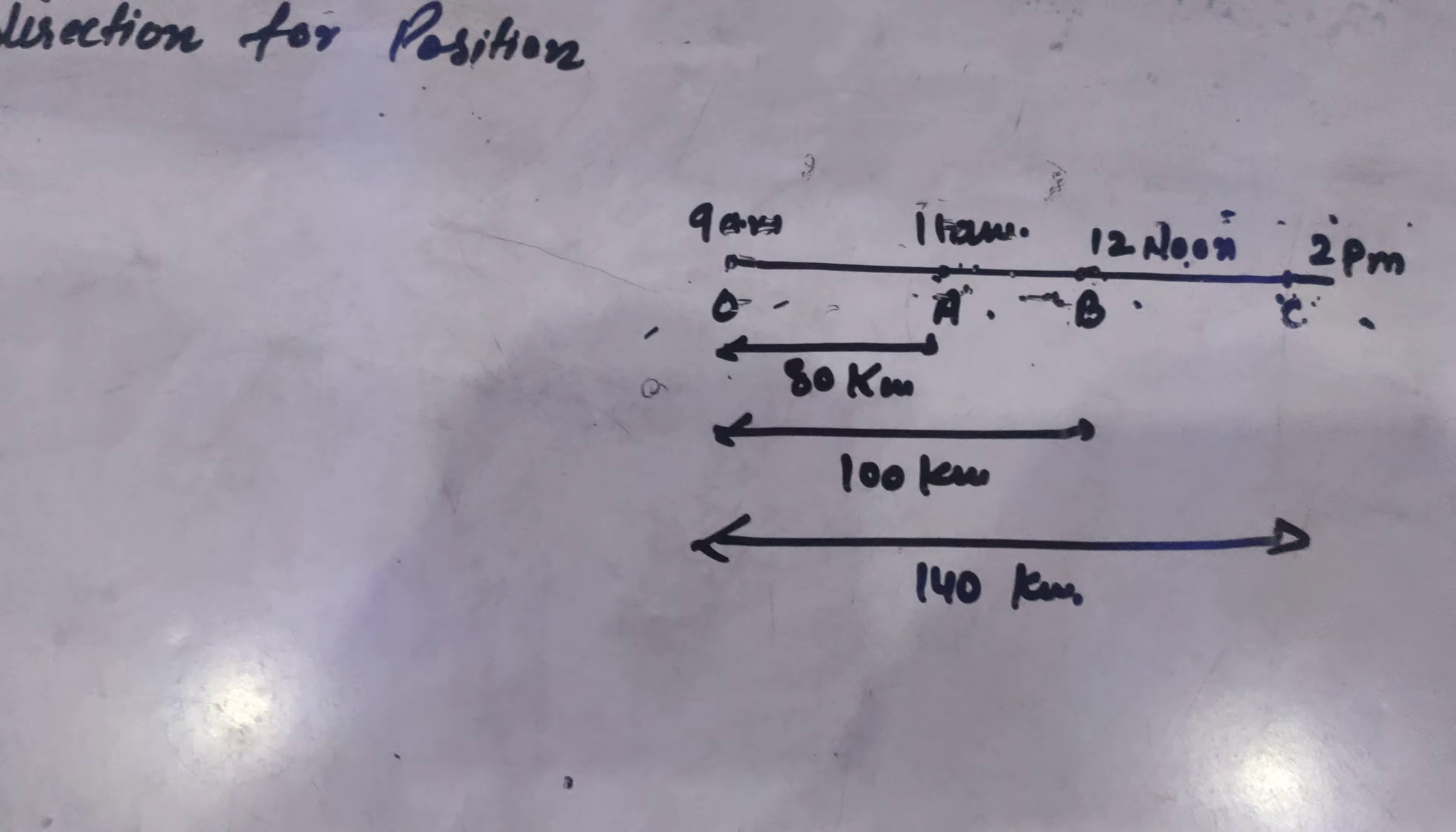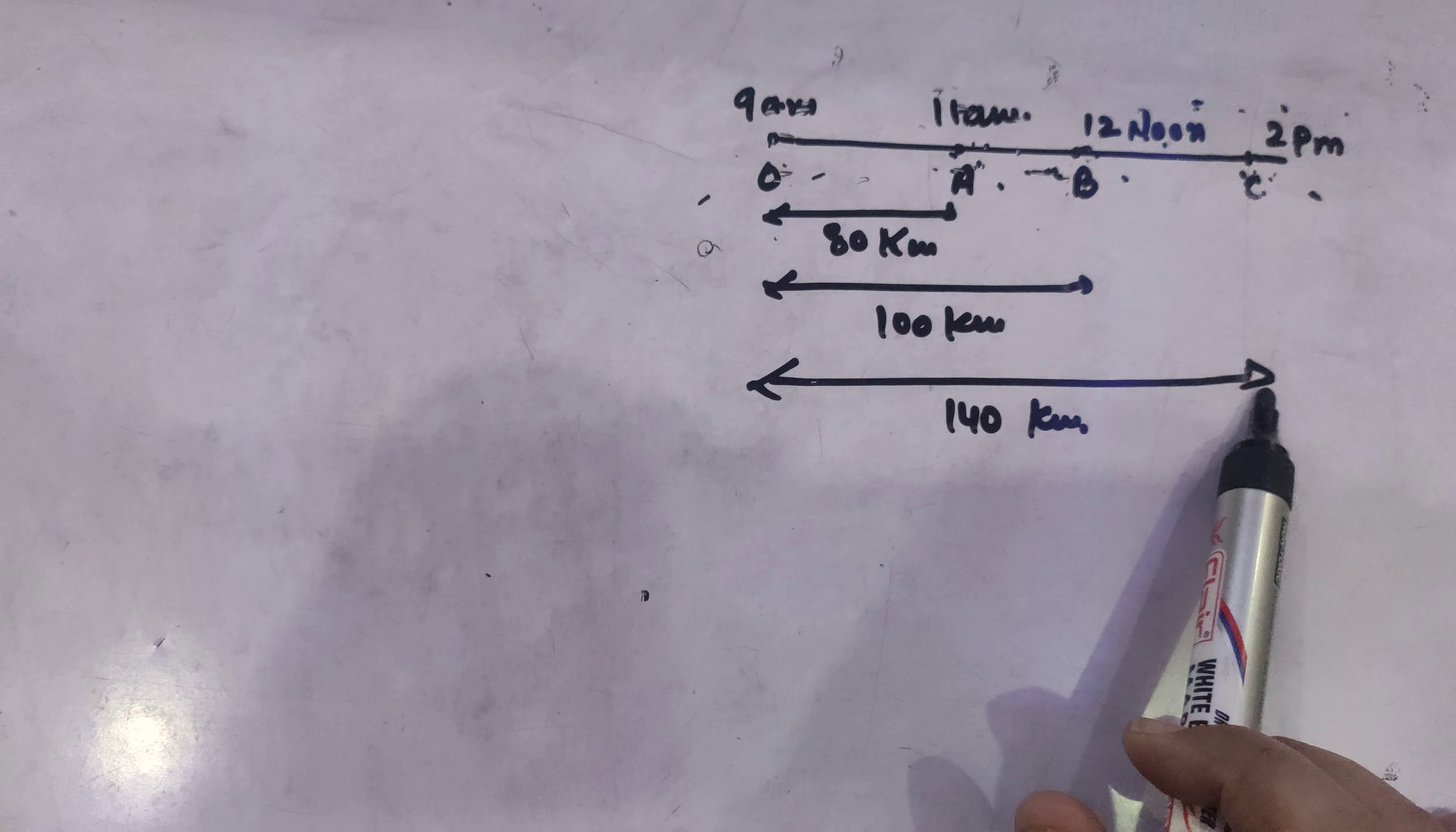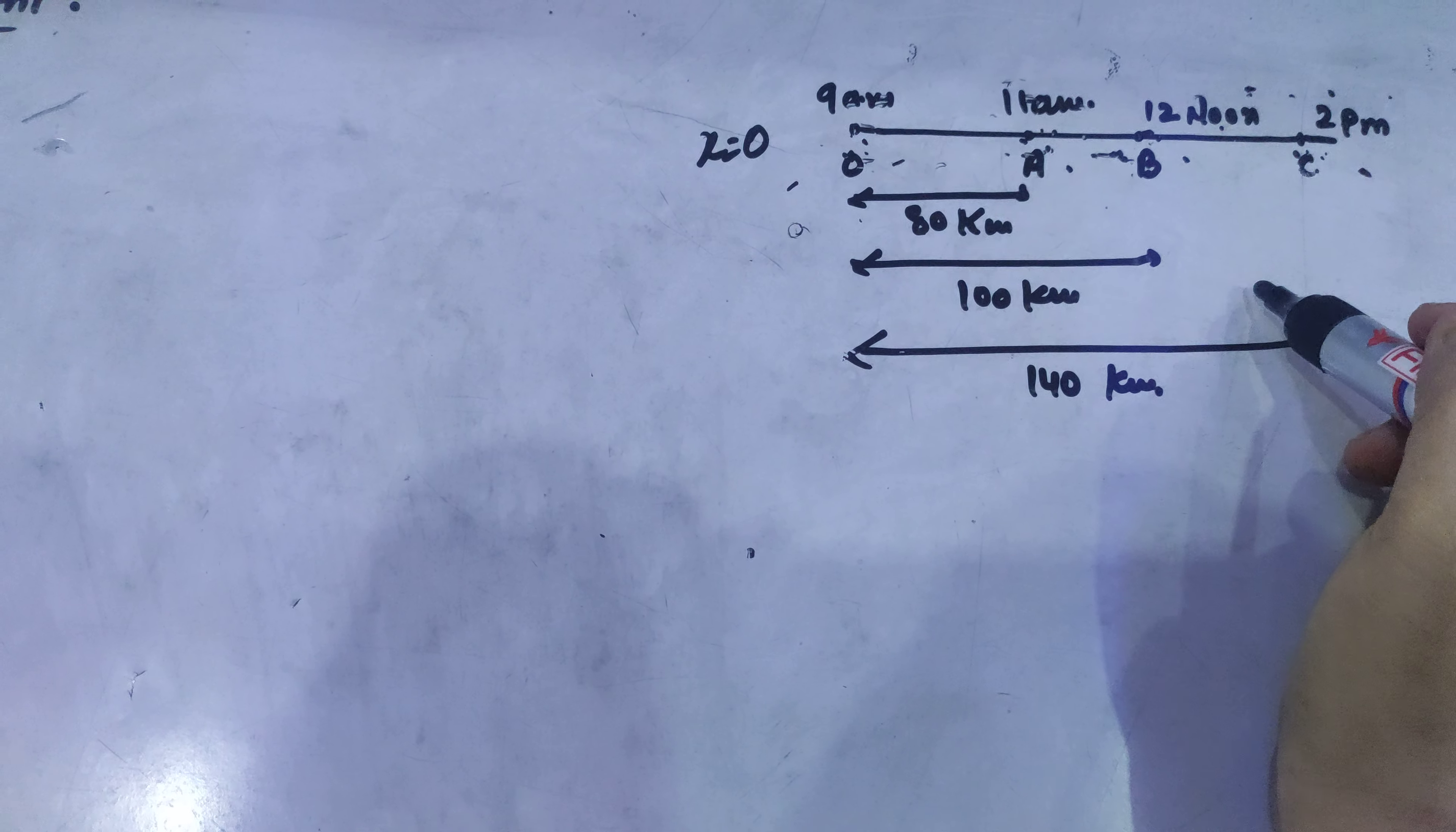Here you can see again this is the same kind of diagram which shows that the position difference between O and A is 80 km, between O and B is 100 km and O and C is 140 km. Now let us take the origin for position coordinate x is equal to 0 at O. In this case again the measurements are 80 km, 100 km and 140 km.